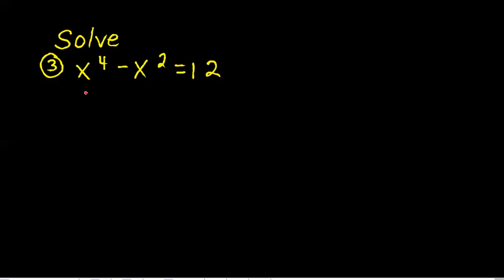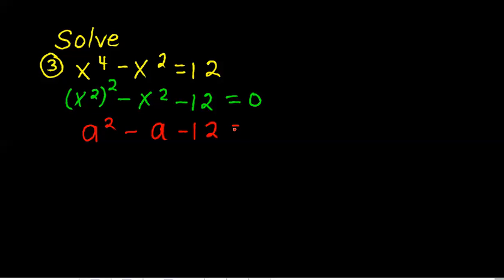What I'm going to do is turn this into x squared squared and minus x squared. And I'm going to subtract 12 from both sides and make it all equal to zero. And I'm going to replace this with a, this is going to be a squared minus a minus 12 equals zero. And I'm going to try to factor this.